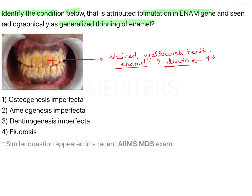It is good to focus on the image but don't miss out on the other information given in the question. The Enam gene relates to enamel, and generalized thinning of enamel tells us this is a defect in enamel, not in the dentine.